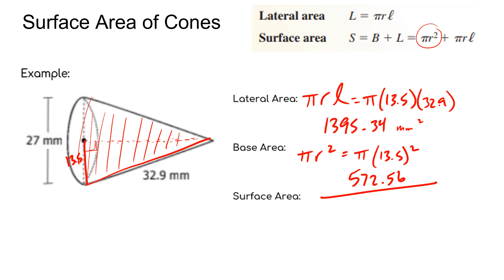We just add those two pieces together. So take that amount, add the 1395.34, and you should get 1967.9, we'll call it, just round it, square millimeters. You could plug this whole formula into your calculator.